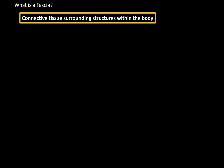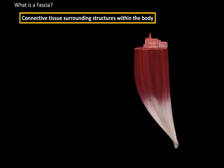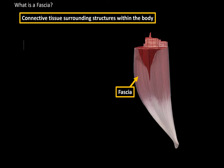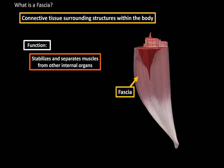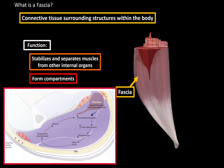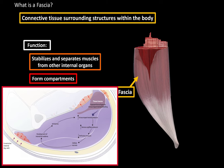A fascia is just a connective tissue surrounding structures within the body. Here's a raw muscle within our body, and here's the fascia — it surrounds the muscle. The fascia stabilizes and separates the muscles from other internal organs. Fascia also forms compartments that separate structures within an area of the body. Especially in clinics, if you get patients with edema within the compartment, we'll get the so-called compartment syndrome, which could be very dangerous as blood supply may get cut off due to the pressure.